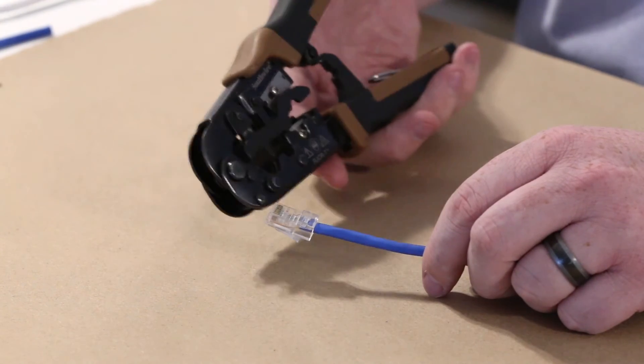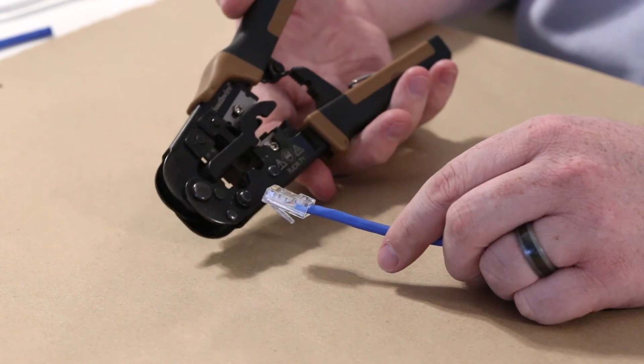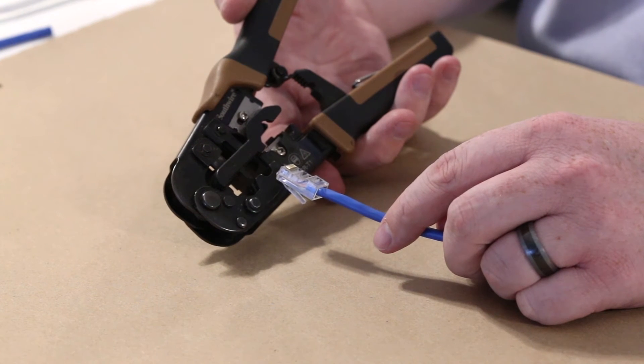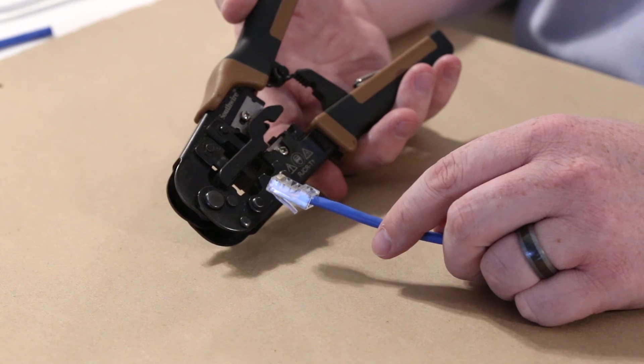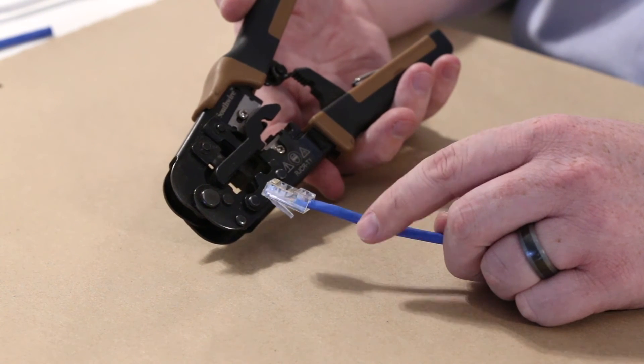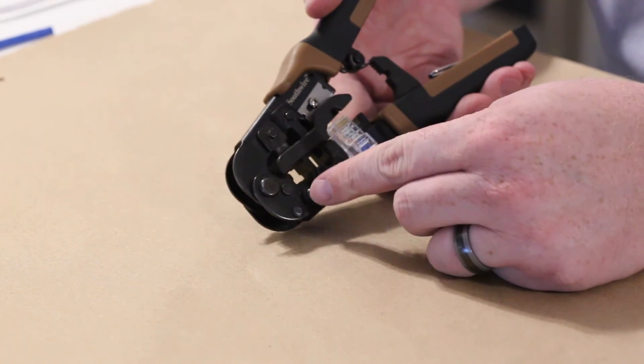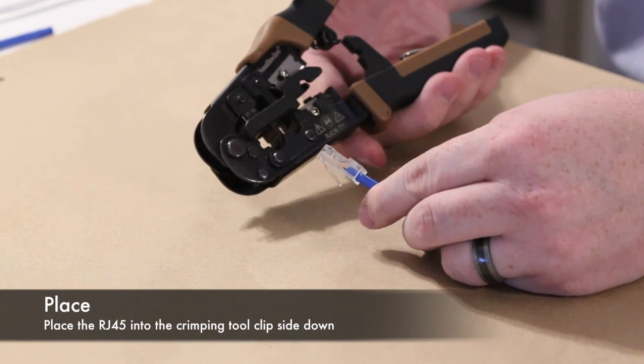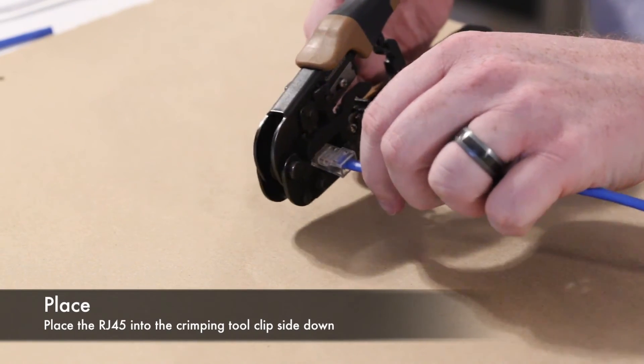The next step is going to be to crimp the RJ45 connector using the crimping tool. So on the crimping tool you'll notice two ports. The smaller one is going to be for RJ11s which are for phone lines. The larger is going to be the RJ45 which is for the ethernet cabling. So also on the crimping tool you'll notice a little notch at the bottom. That is for the clip on the RJ45 connector to go into. So we're going to keep this clip side down and insert it into the crimping tool.